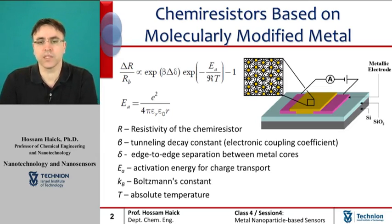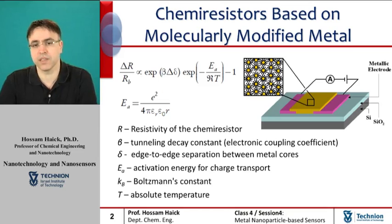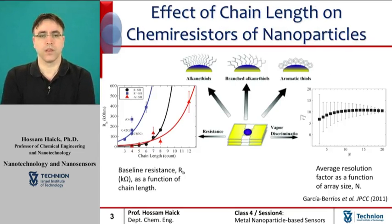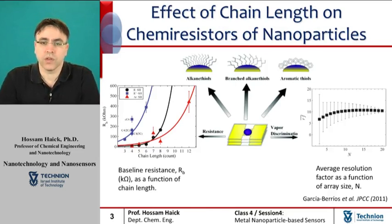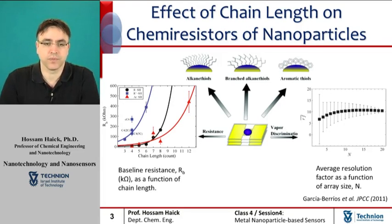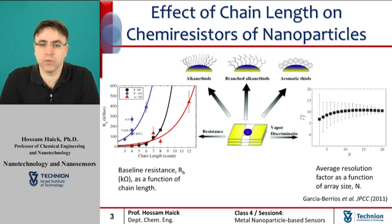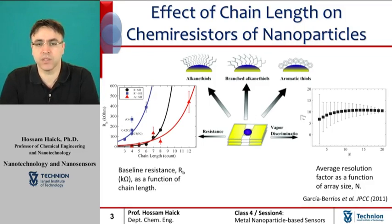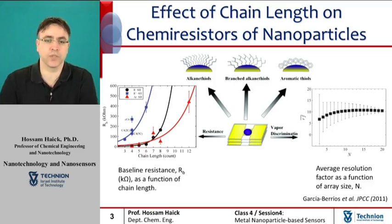In the following slides, we will discuss the parameters that affect the sensing mechanism. We will start with the effect of the chain length of the capping ligands. In chemoresistors that are based on molecularly modified metal nanoparticles, the chain length of the capping ligands has a critical effect on the sensing properties of the sensors.